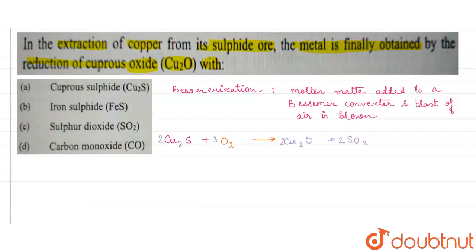So now this is the cuprous oxide which is formed. Now the cuprous oxide is reacted with the Cu2S again to form Cu plus SO2. For balancing this we need 2 over here